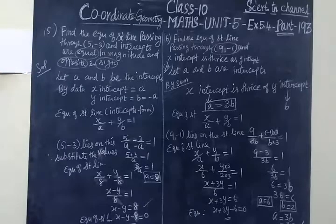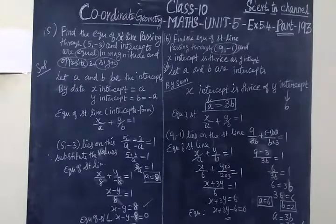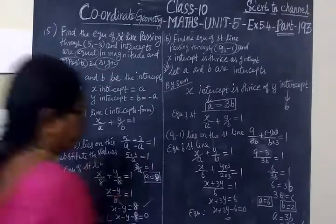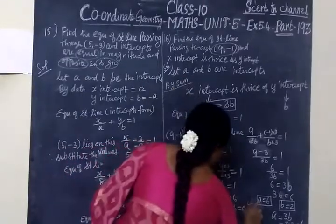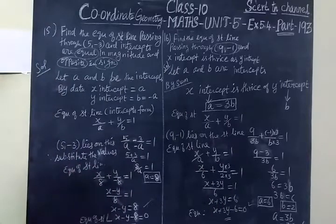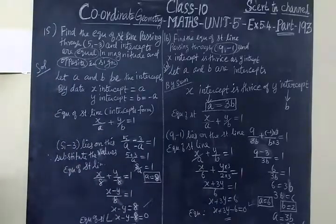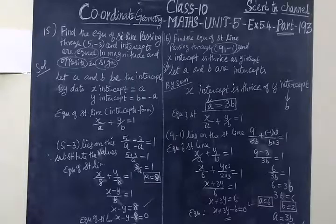The answer x plus 3y minus 6 equals 0 is correct for the 16th question. In the next class we will see Part 193, the 17th and 18th questions. Thank you, students.